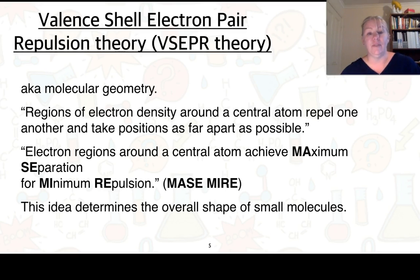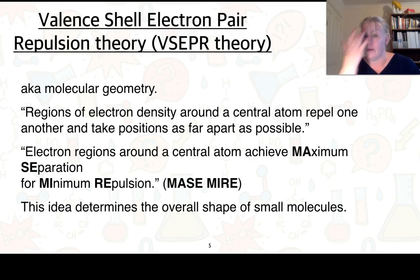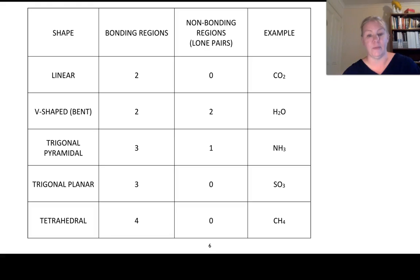To determine these shapes, we use VSEPR theory, also known as molecular geometry. We look at regions of electron density around a central atom and the fact that they repel one another and take positions as far apart as possible, because electron regions are negative and so they repel each other. In other words, electron regions around a central atom achieve maximum separation for minimum repulsion — that's the key principle we'll be using.